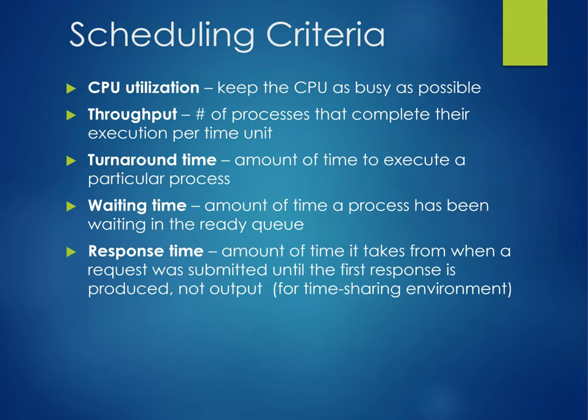Some criteria used in scheduling: CPU utilization — we want to keep the CPU as busy as we can. Throughput is the number of processes that complete their execution per unit time. Turnaround time is the amount of time to execute a particular process. Waiting time is the amount of time a process has been waiting in the ready queue. Response time is the amount of time from when a request was submitted until the first response is produced, not output, in a time-sharing environment.